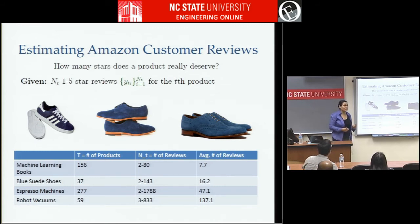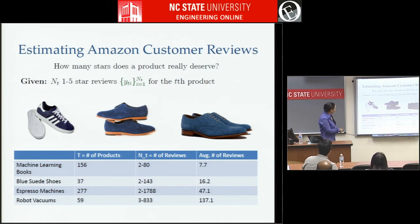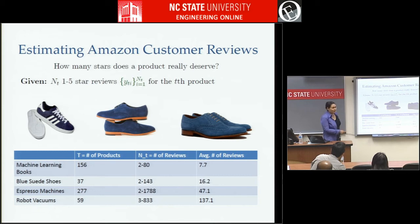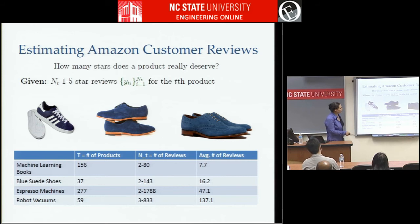We use a leave-one-out cross-validation setting: leave one review out, form estimators, see how we did on that left-out review, and iterate. We looked at four product categories: machine learning books, blue suede shoes, espresso machines, and robotic vacuums — ranging from 37 products for blue suede shoes to 277 espresso machines. The number of reviews per product ranged from as few as two to as many as 1,788 for one espresso machine, showing people are very passionate about coffee.